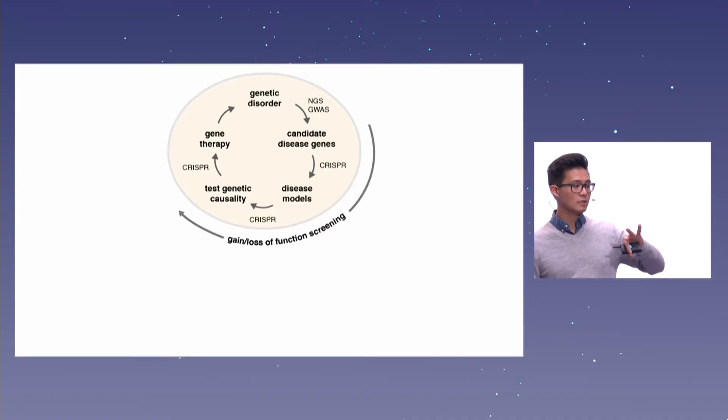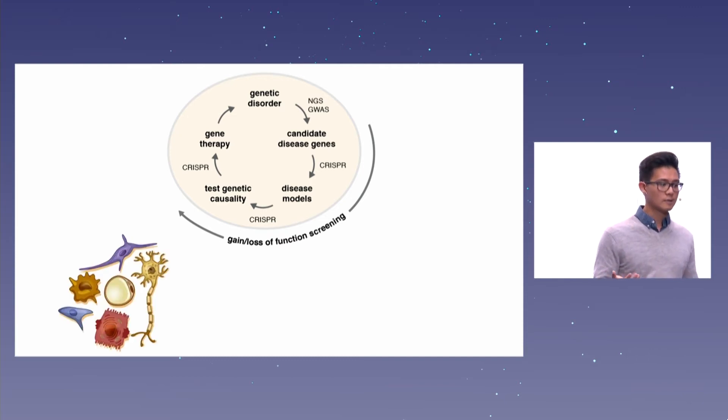So back to the wheel. We have these candidate disease genes. Using CRISPR, we can now start to create disease models to try to figure out, if we recreate these genetic mutations, do we see disease phenotypes? And for example, if we're trying to study ion channels, we could mutate those ion channels in brain cells and see, do they fire differently? Do they wire differently? Do they talk to each other differently? Do we see the kinds of problems that we see actually in patients?